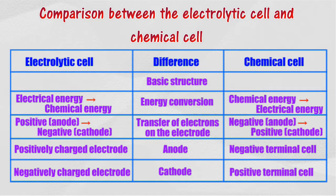In the electrolytic cell, two similar or different electrodes are immersed into the electrolyte, while in the chemical cell, two different electrodes are immersed into the electrolyte.